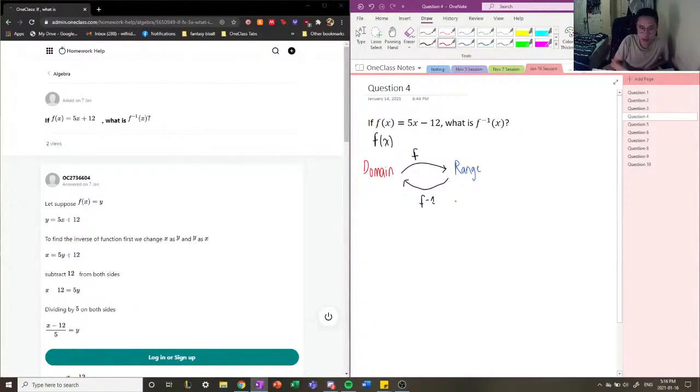So in this case, the domain of the inverse function is the range of the original function, and the domain of the original function is now the range of the inverse function. So that's how the inverse works.